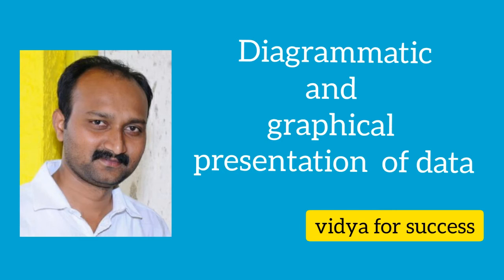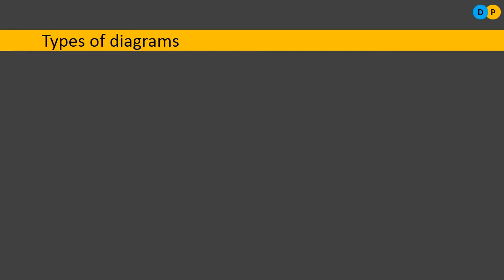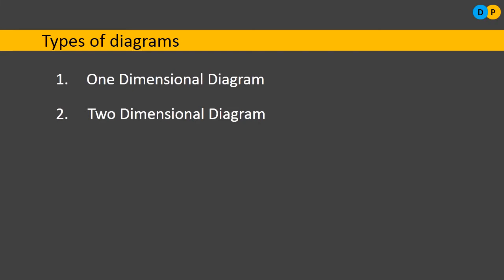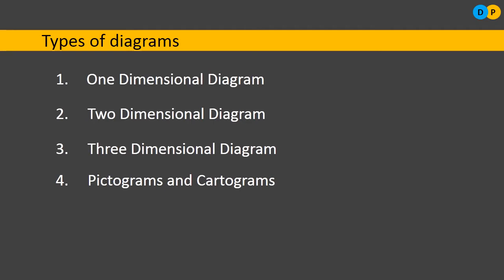Hello students, welcome to YouTube channel Vidya for Success. In this video, let us study the different types of diagrams. There are different varieties of diagrams which can be used to represent the data. The four important types are: one-dimensional diagram, two-dimensional diagram, three-dimensional diagram, and pictograms and cartograms. Using these, we can represent data so that common people can understand it.